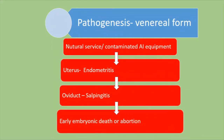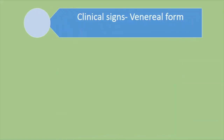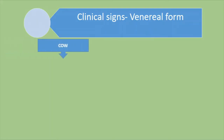In pathogenesis, whether through natural service or contaminated AI equipment, the organism gets into the uterus — first into the cervix where it multiplies, then into the uterus causing endometritis, and into the oviduct causing salpingitis. In the oviduct, salpingitis means the embryo may not survive, causing early embryonic death. The animal returns to heat after some time, conception may occur but attachment fails, the embryo dies in early stages, and finally if attachment does occur there can be abortion through infection of the cotyledons.